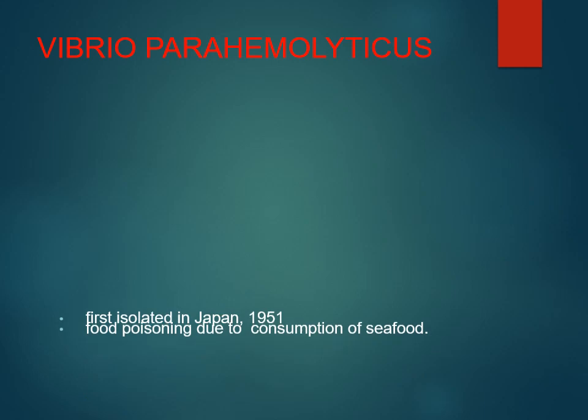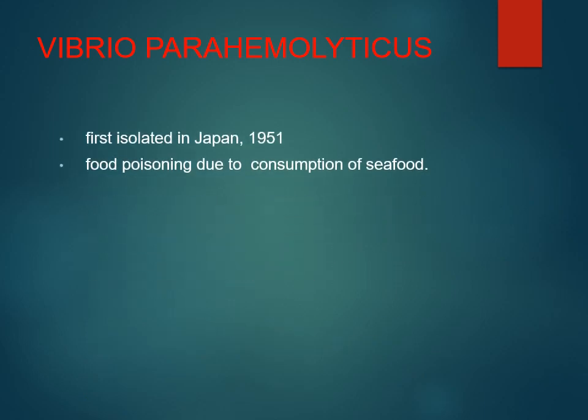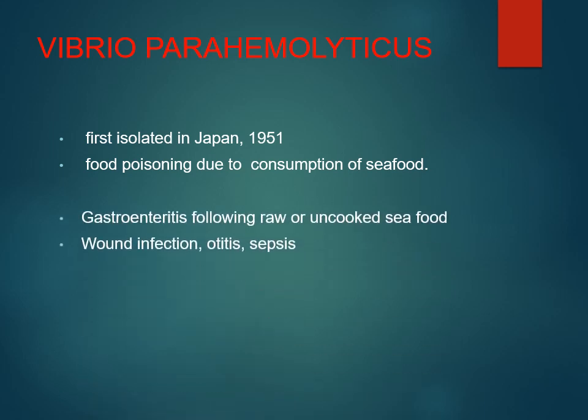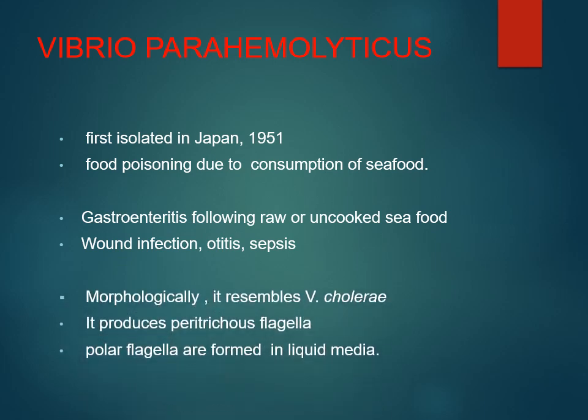Now for other vibrios: halophilic vibrios cannot grow in the absence of sodium chloride. An important one is Vibrio parahaemolyticus — a halophilic vibrio first isolated in Japan, associated with food poisoning from seafood consumption. Unlike cholera's rice-water stools, it causes gastroenteritis with a history of raw or uncooked seafood intake, and can also cause wound infection, otitis, and sepsis.